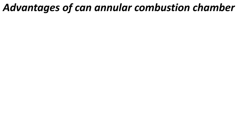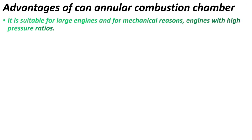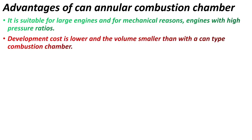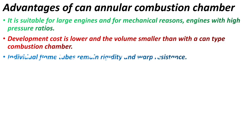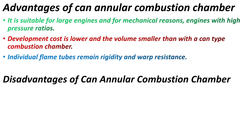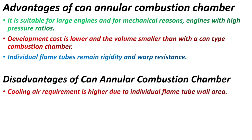Advantages of the can-annular combustion chamber: it is suitable for large engines and for mechanically demanding engines with high pressure ratios; development cost is lower and volume is smaller than a can type combustion chamber; and individual flame tubes remain rigid and warp resistant. The main disadvantage is that the cooling requirement is higher due to the individual flame tube wall area. That covers the annular combustion chamber and can-annular combustion chamber.